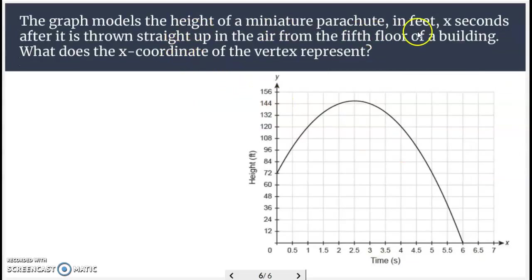The graph models the height of a miniature parachute in feet x seconds after it's thrown straight up in the air from the fifth floor of a building. What does the x-coordinate of the vertex represent? So a person here is 72 feet up, fifth floor. They throw a parachute up high that reaches a max height. It's almost 145. If you look at that right there, I'd say the coordinates are 2.5. And notice down here where it's occurring, 2.5.